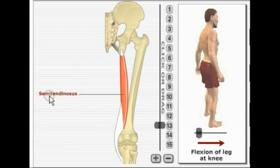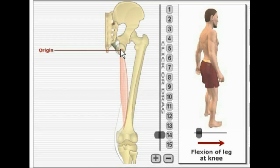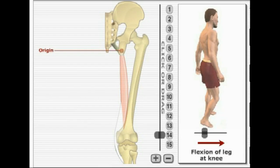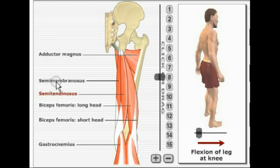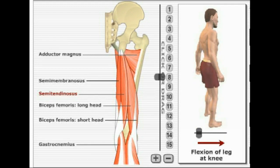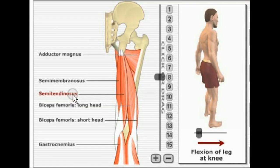The next muscle of the hamstring group is the semitendinosus. Its origin is the ischial tuberosity of the ischium, and it inserts on the proximal medial surface of the tibia. Its primary action is flexion of the leg at the knee, and it also performs extension of the thigh at the hip. The final muscle of the hamstring group is the semimembranosus. It also originates on the ischial tuberosity of the ischium but attaches at the medial condyle of the tibia. All three hamstring muscles perform flexion of the leg at the knee and extension of the thigh at the hip. So the three muscles of the hamstring group are semitendinosus, semimembranosus, and biceps femoris.